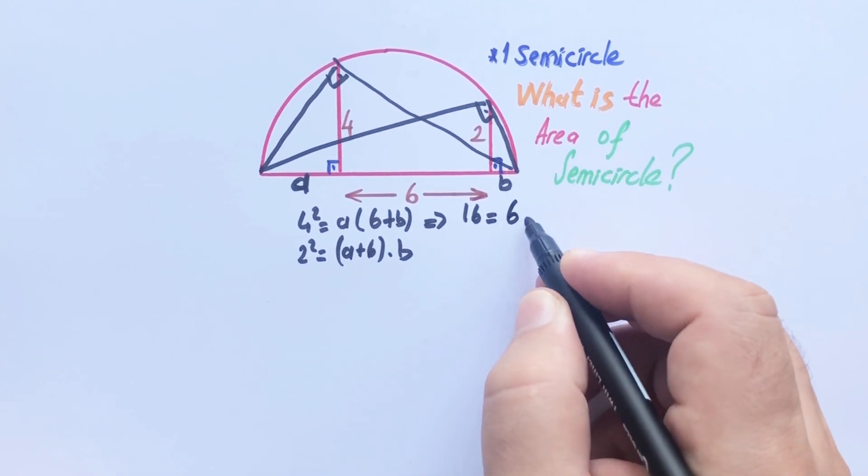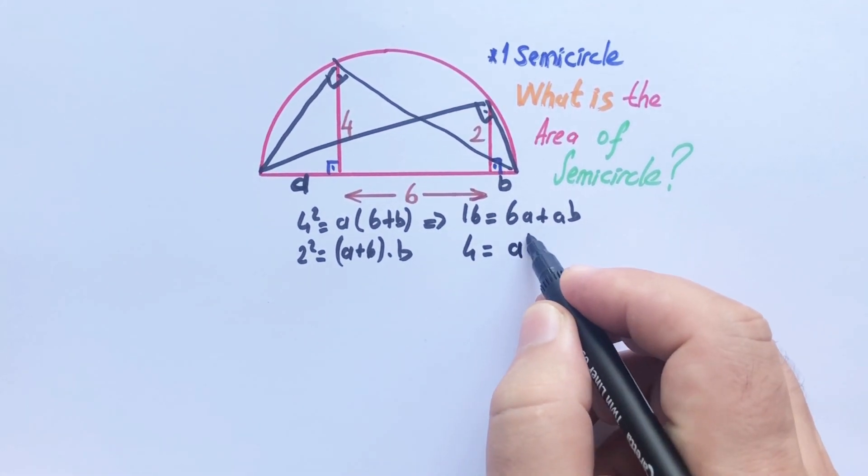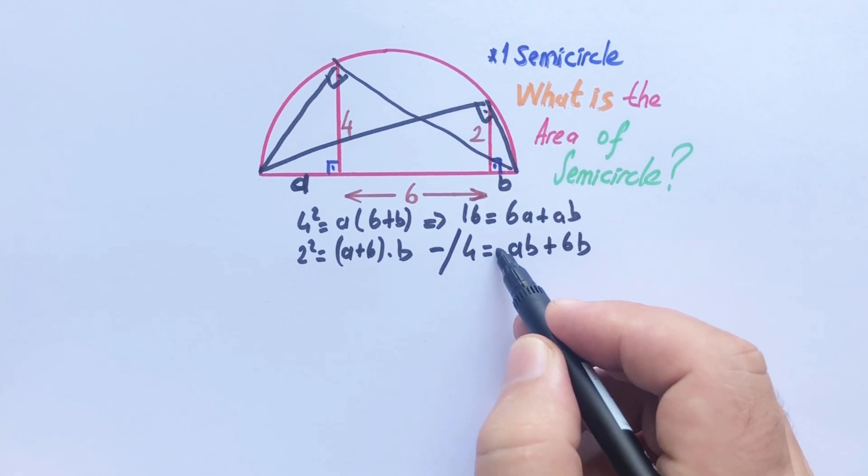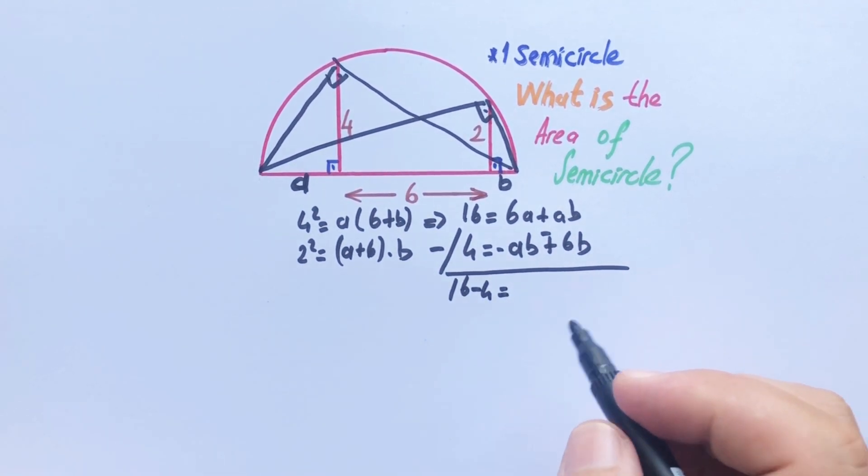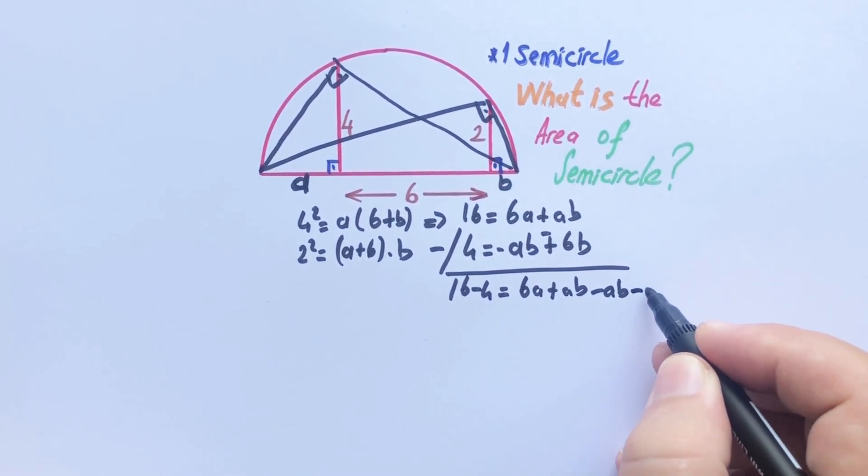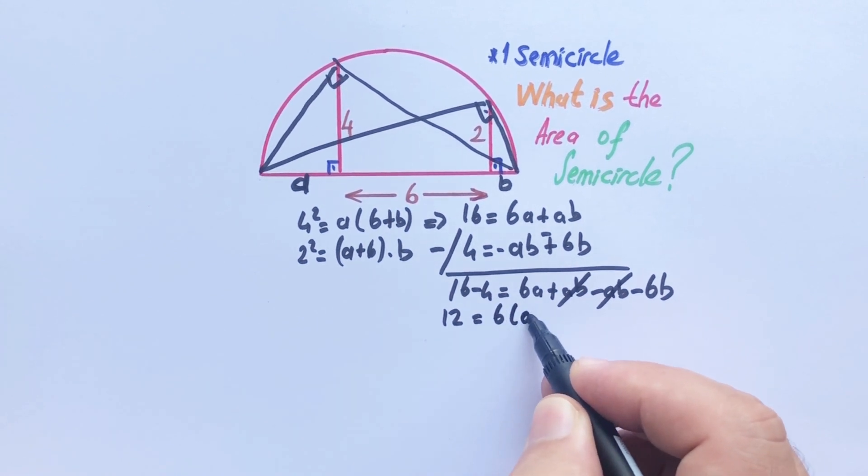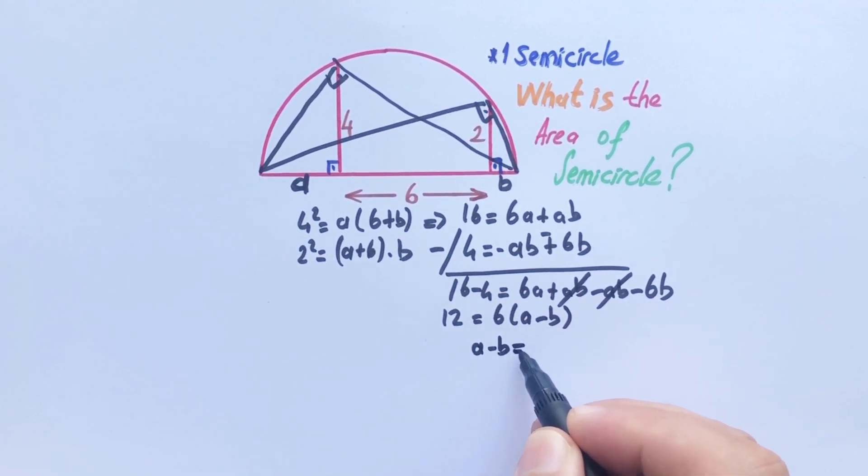16 equals 6a plus ab, and 4 equals ab plus 6b. If we multiply with minus these two, this equation: 16 minus 4 equals 6a plus ab minus ab minus 6b. These are gone, so 12 equals 6 times (a minus b). Therefore a minus b equals 2, and a is going to be b plus 2 units.